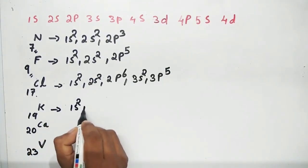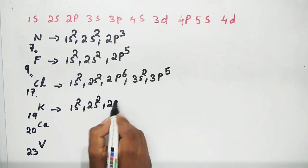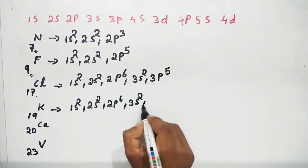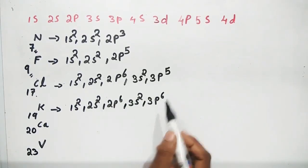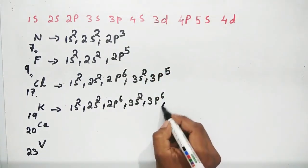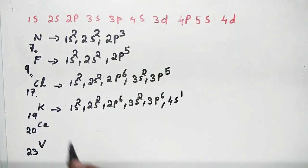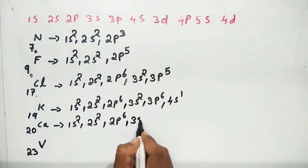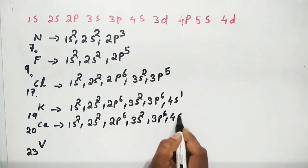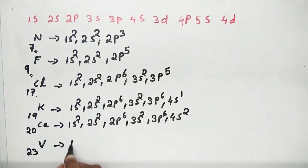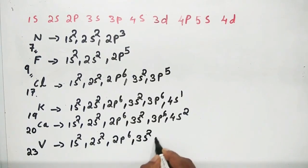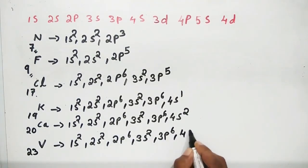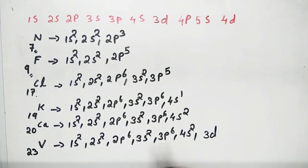Potassium has atomic number 19: 1s², 2s², 2p⁶, 3s², 3p⁶, 4s¹. Calcium has atomic number 20: 1s², 2s², 2p⁶, 3s², 3p⁶, 4s². The next element after calcium has configuration ending in 3d³, since the 3d subshell begins filling after 4s.